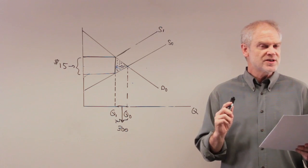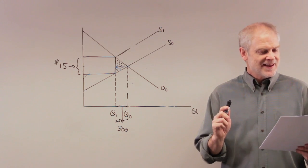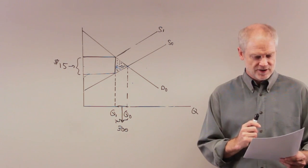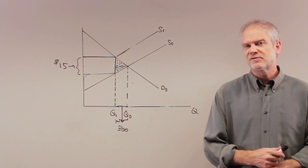The tax reduces equilibrium quantity in the market by 300 units. Question? The deadweight loss from the tax is.